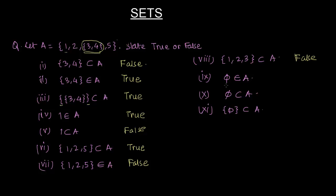Phi belongs to A. No. Phi is a subset. Always a subset of A. So it will not belong to this. So this is false.